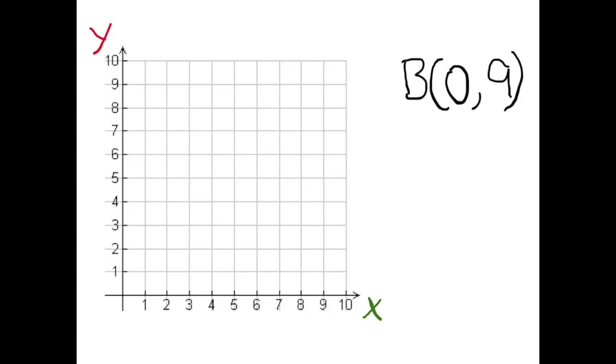That's right. We need to identify our coordinates. For the point B, the X coordinate is 0, and the Y coordinate is 9. As always, we start with the X coordinate. Since it's 0, this means that we don't move along the X axis.